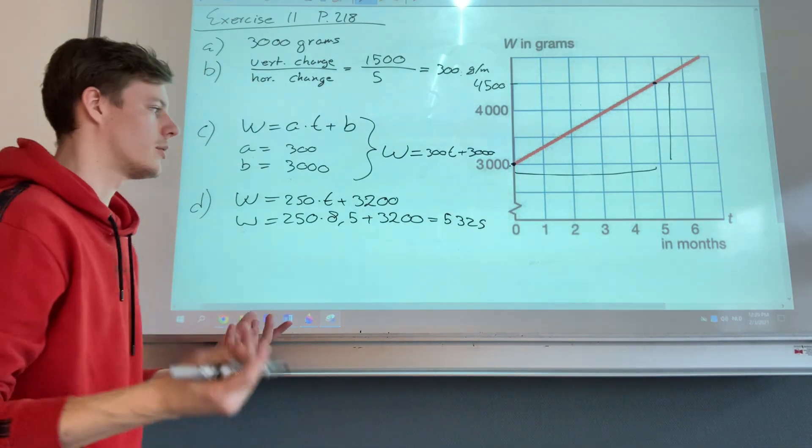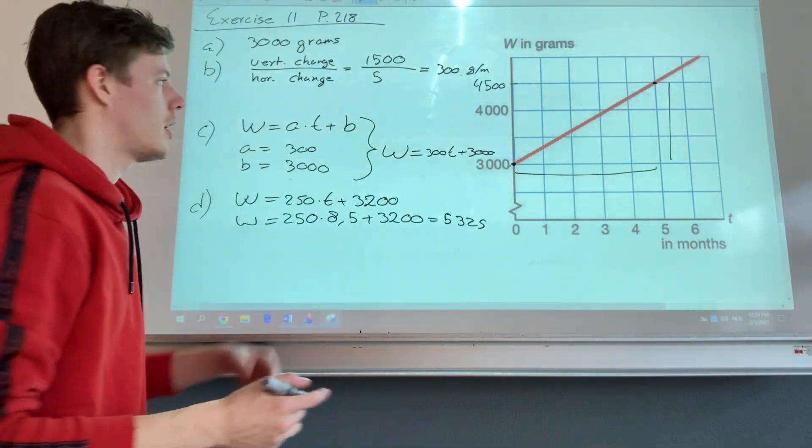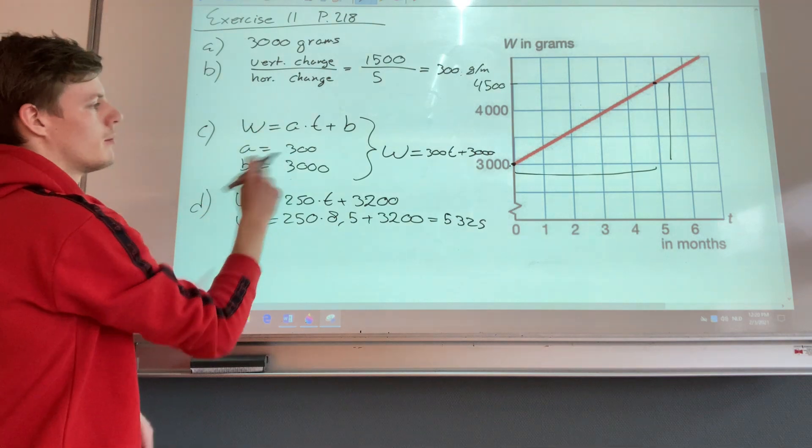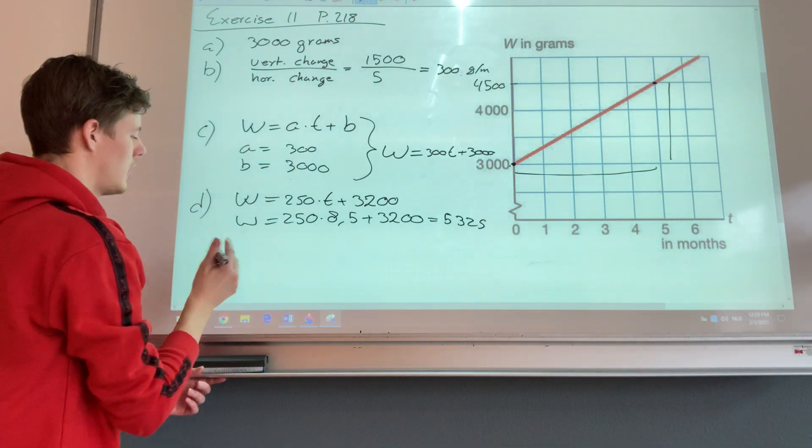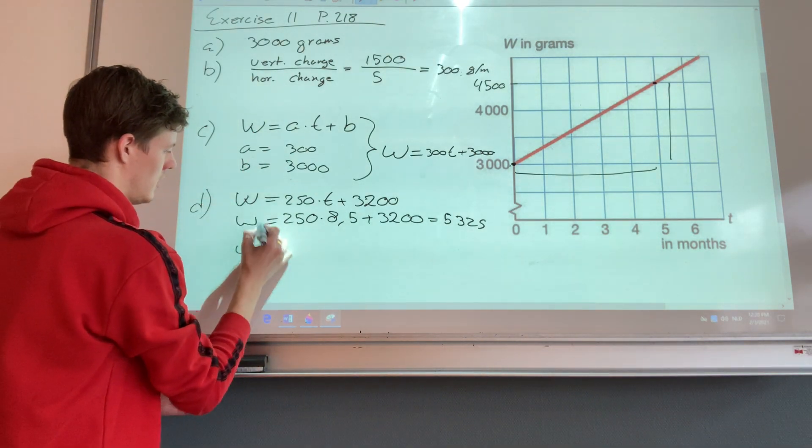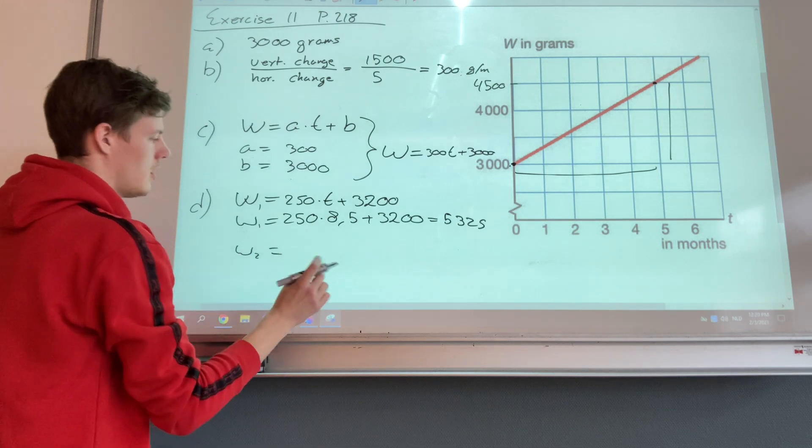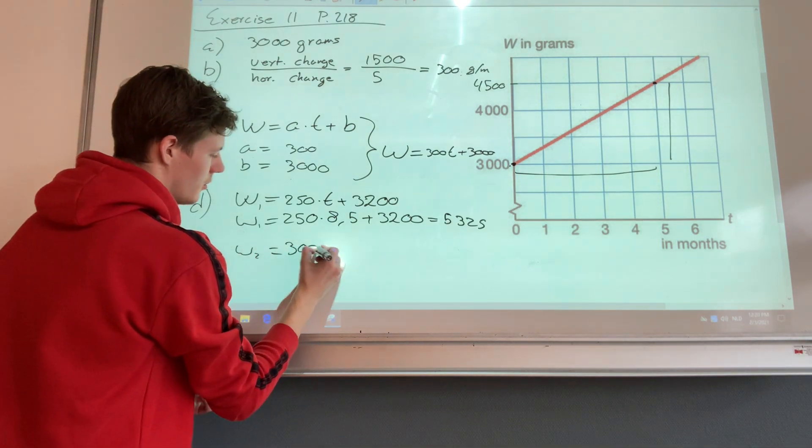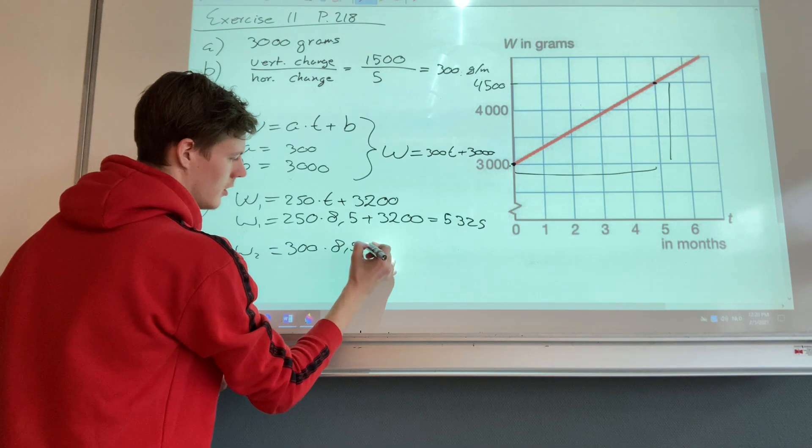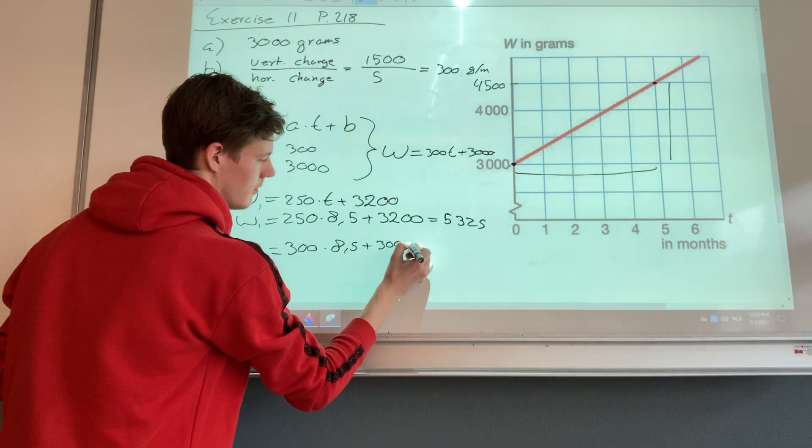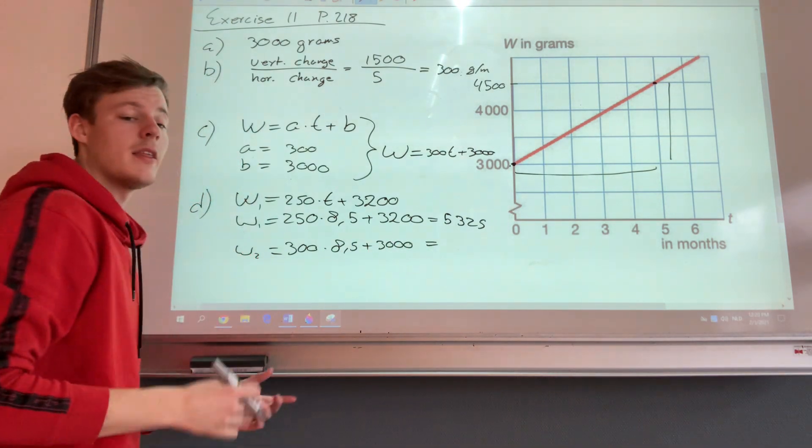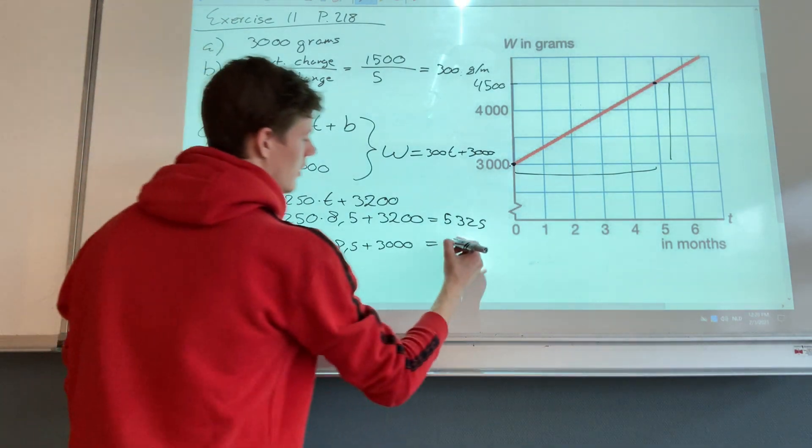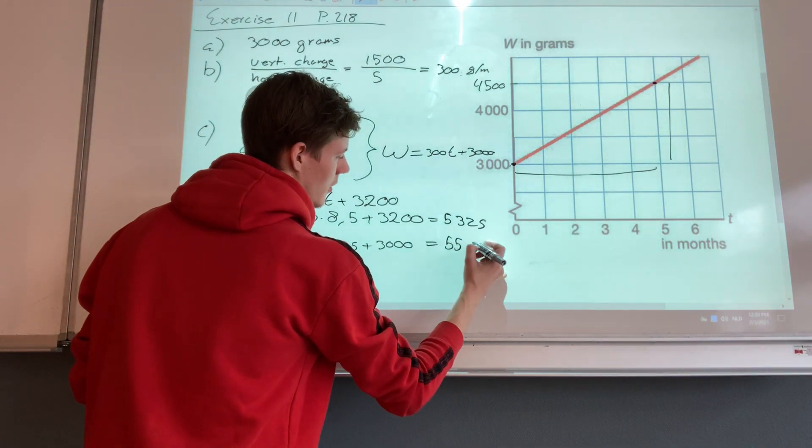Then we need to fill in the same t in the formula for Maureen. Because this is Michael, now we have Maureen. This is one, this is two. Alright, it's 300 times eight and a half plus 3,000. Now this equals 5,550.